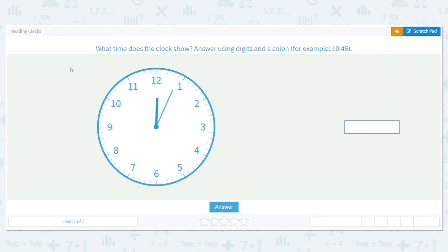All right, let's practice reading clocks. What time does the clock show? And make sure we're using digits and a colon. A colon is the dots that are between our hours and minutes.